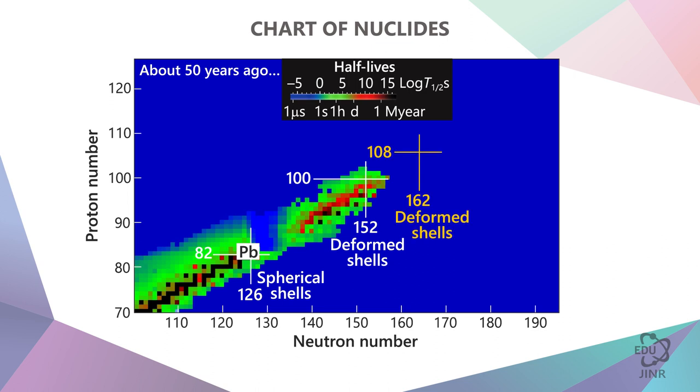Continuing further, we can see the next shell, 108 and 162 neutrons. These nuclei are very similar to this one, but if we go further, we will see 114 and 184. It will be a spherical nucleus similar to lead.